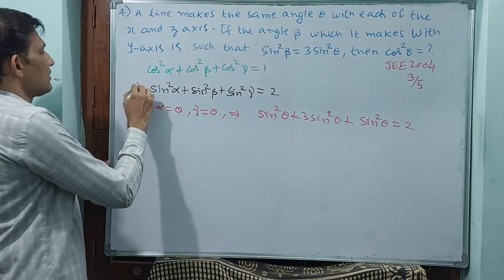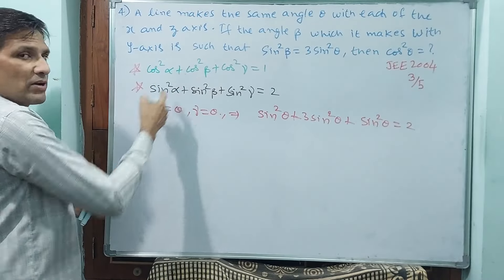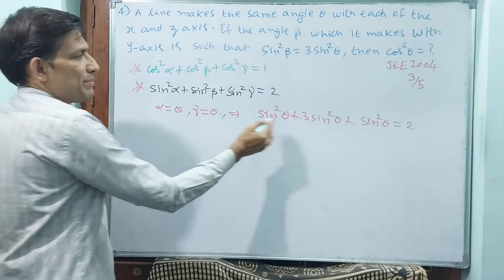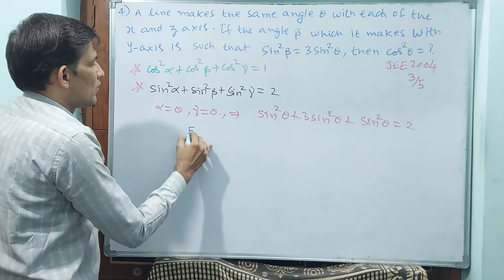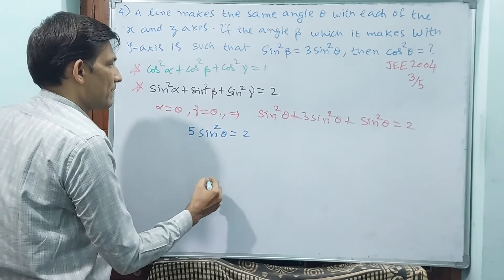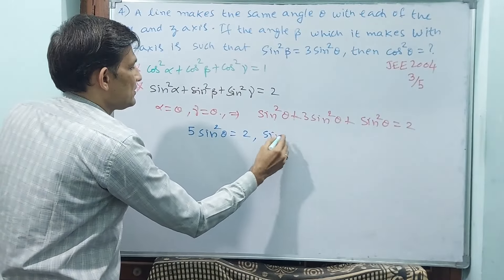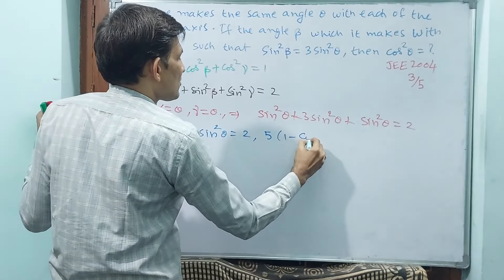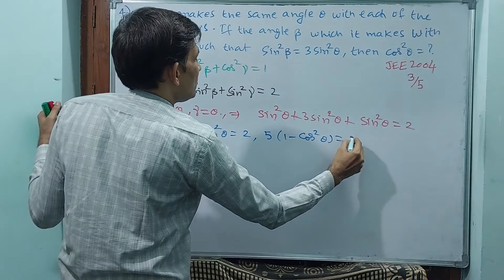See, this is formula. This is also formula but this already we have done one question. See, 1 plus 3 plus 1 is 5. 5 sin square theta is equal to 2. Then 5, 1 minus cos square theta is equal to 2.